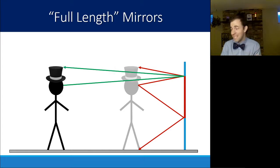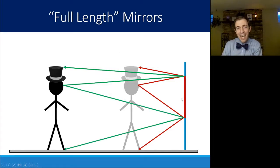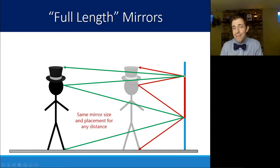To see the top of his top hat, he needs to bisect that distance between his eyes and his top hat. Same thing with his feet. Notice how the light is bouncing at the exact same extremes on the mirror. So the same mirror size is required for any placement of any distance. That you can get the smallest possible mirror, which would end up being exactly half of your total height. And then if you place it perfectly, it doesn't matter where you're standing. You'll always be able to see your full image in that mirror.